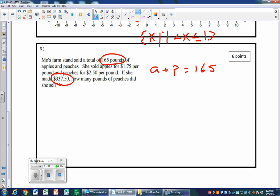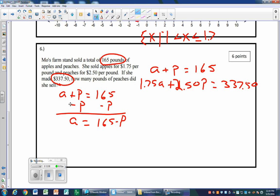And the other equation: apples were $1.75 and peaches were $2.50. So $1.75 per pound times the number of pounds, plus $2.50 per pound for peaches, had better equal the total amount of money, $337.50. When we're doing a coin problem or a ticket problem, this is the standard way to do it. There are two ways to solve this. We can do it using substitution or elimination. Let's do it using substitution. I'm going to subtract p from both sides. So everywhere I see an a, I can write 165 minus p.